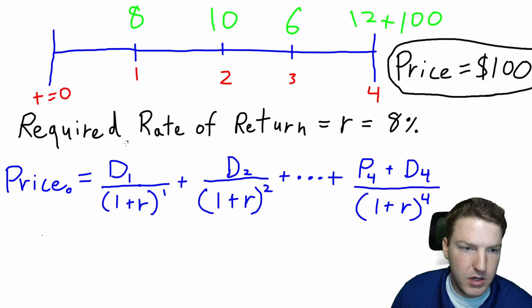We're just going to take the dividend, so D1 is the dividend at time one, and we're going to divide it by one plus the required rate of return of 8% and then put it to the value of the exponent of one, which is this time period.